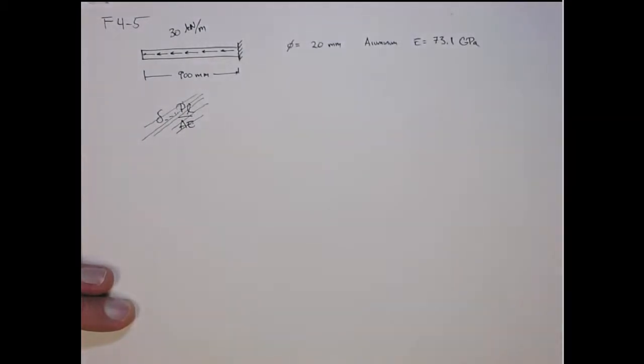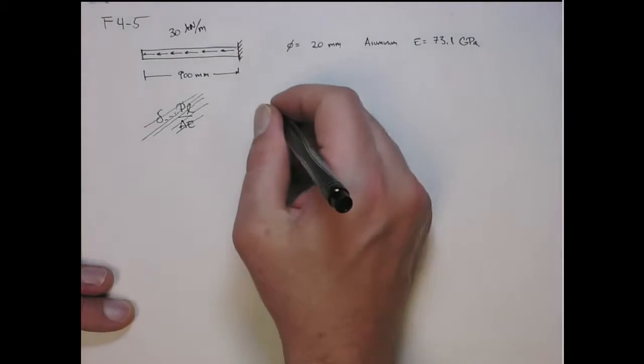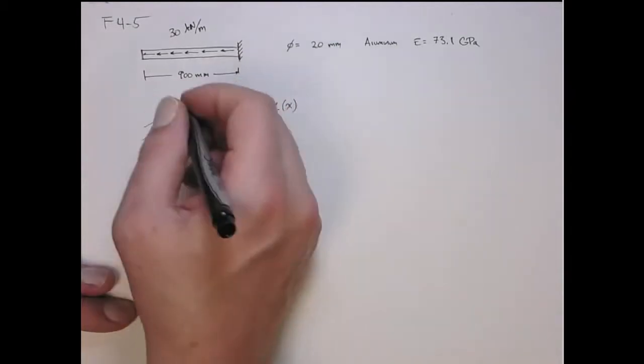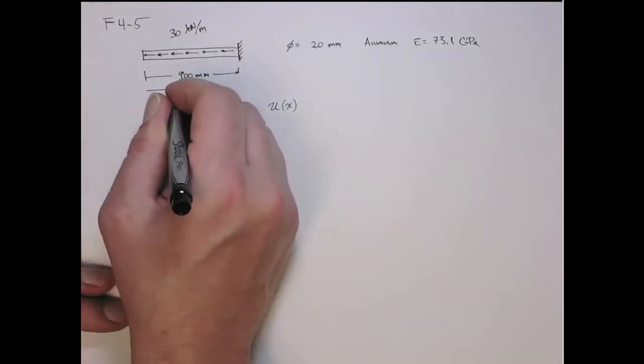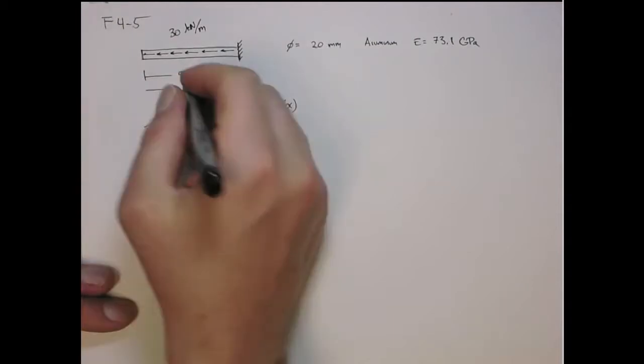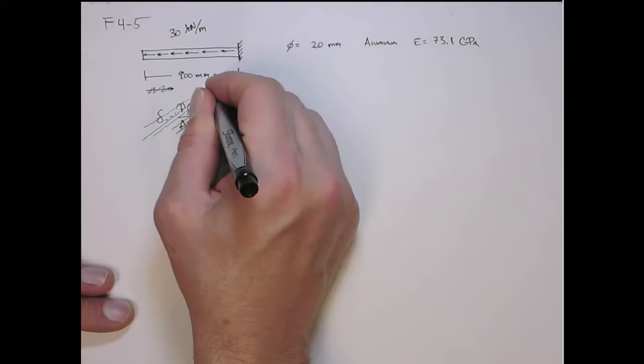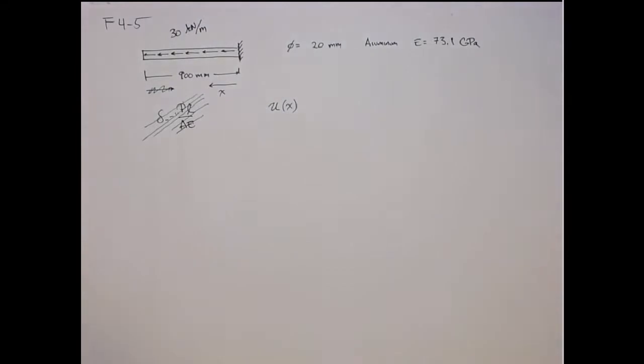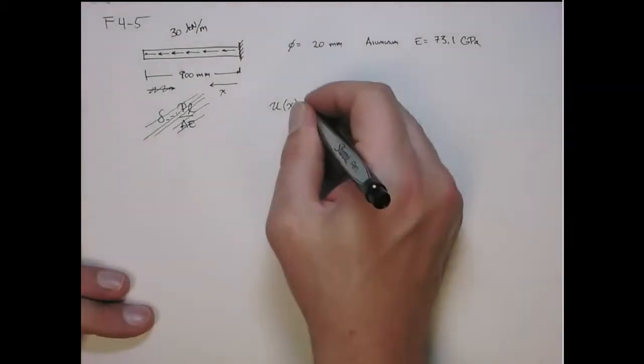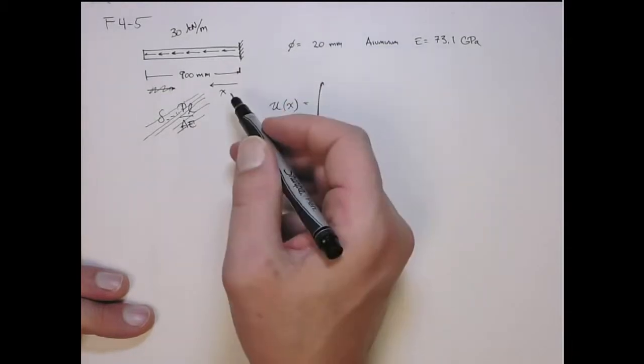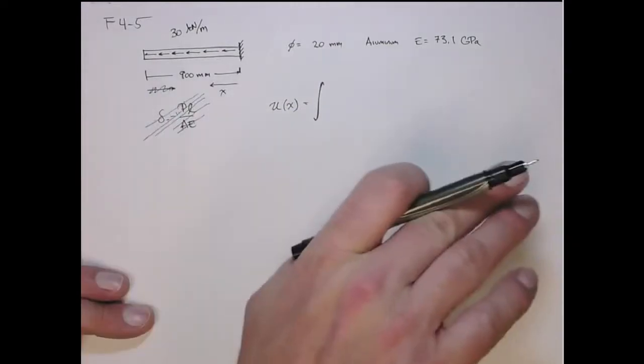We have to go back to the original definition when I derived it in class. We found that the displacement at some point x - let's define x that way. Let's make x go in the backwards direction for this problem just to make it a little easier. Obviously you can do it either way. It's good to see it in reverse direction even though I almost always draw it to the right.